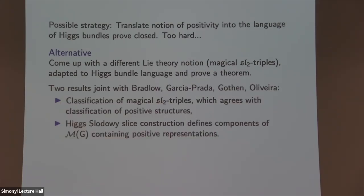This is joint work with Steve Bradlow, Oscar García-Prada, Peter Gothen, and André Oliveira. There are a few results. First, a Lie-theoretic classification of magical SL₂ triples. Importantly, the set of these objects has the same classification as the set of pairs (G, P) which have this notion of positivity. Then we do a Higgs bundle version of a Slodowy slice for these very special SL₂ triples, and show the resulting components contain positive representations — giving candidates for higher Teichmüller spaces using Higgs bundles.